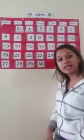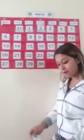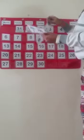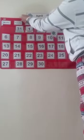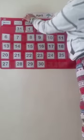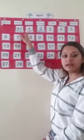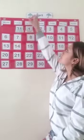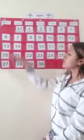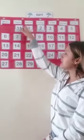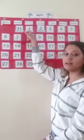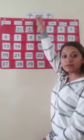Yesterday was the last day of March. So today is April. Let's say Wednesday 1 April. Let's say it again — Wednesday 1 April.